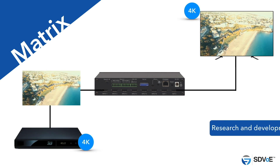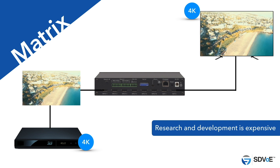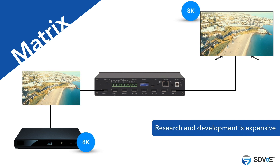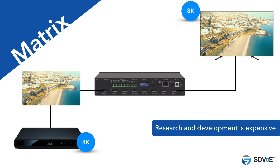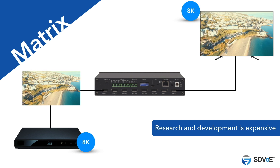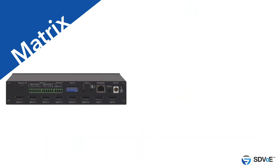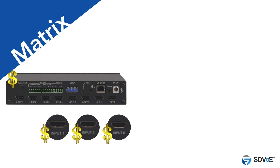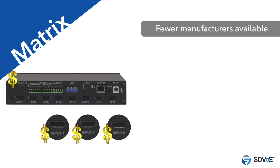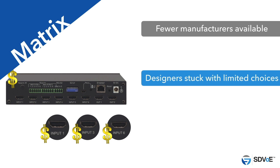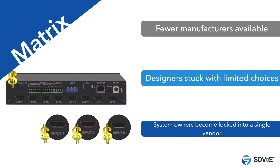Unfortunately, R&D is expensive, and as image resolutions get bigger and the demand for perfect latency-free video distribution grows, more and more money needs to be spent making sure the matrix switch can deliver it, and this makes each port more and more expensive to buy. As development costs spiral out of control, fewer and fewer manufacturers are able to keep up. Designers are stuck with only a few choices, and system owners end up locked into a single vendor for their entire system.